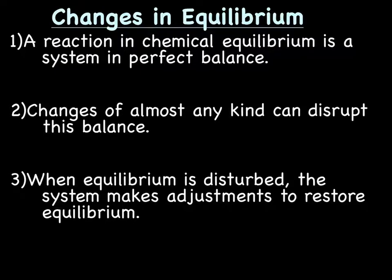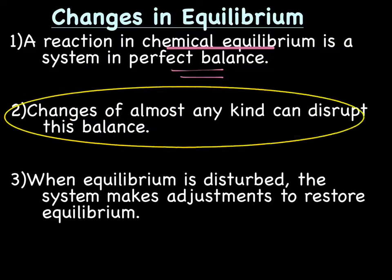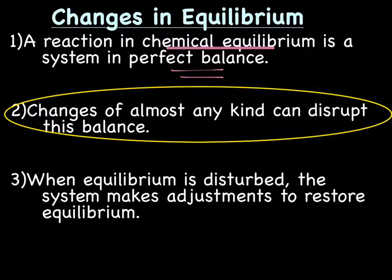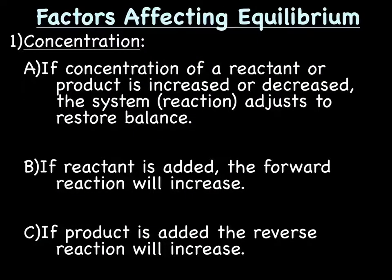Changes in equilibrium — the point of the lecture. A reaction in chemical equilibrium is in perfect balance. However, changes of almost any kind can disrupt this balance. When equilibrium is disturbed, the system — the reaction — makes adjustments to restore equilibrium, to get things back in perfect balance. We're going to spend the rest of the lecture talking about factors that can affect equilibrium and how we can change this perfect balance to make more product or more reactant.